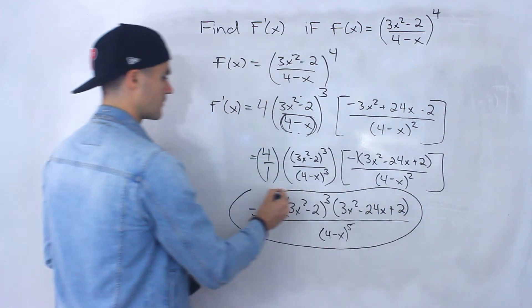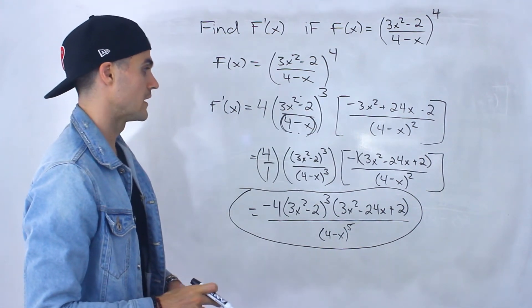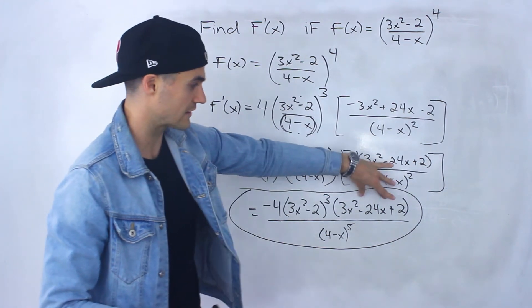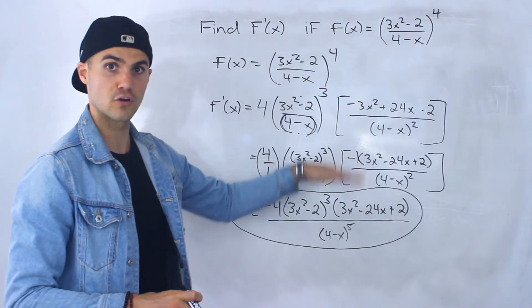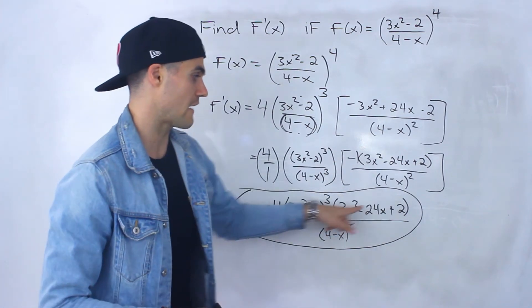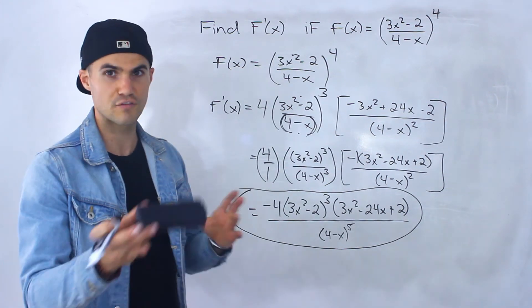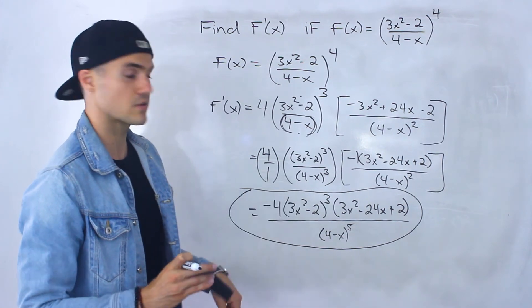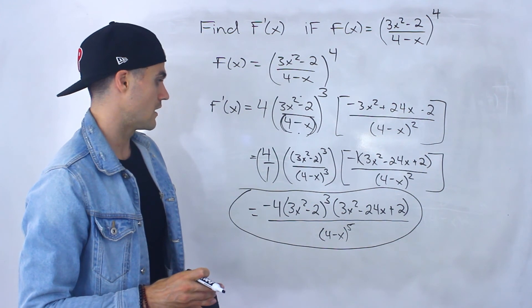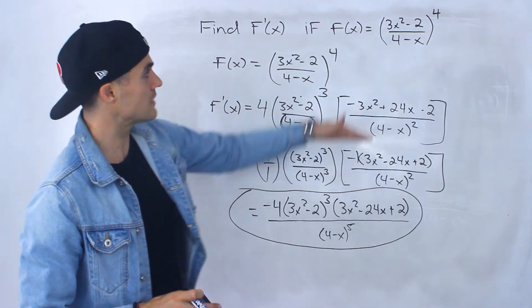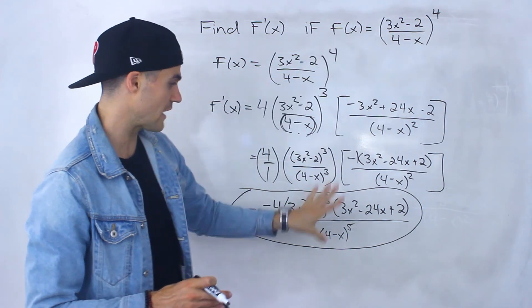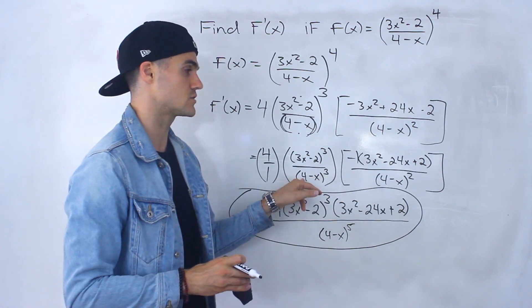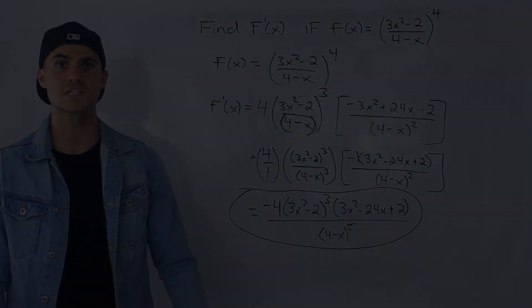So this here ends up being the final answer. Now with these kinds of questions, you also want to make sure that, if possible, you factor the numerator terms, because sometimes factors can further simplify. But notice that 3x squared minus 24x plus 2 wouldn't factor into nice factors, and 3x squared minus 2 wouldn't either. So this is the simplified version. A lot of times when you see a function like this, the final answer is going to be one fraction with the denominator combined. So just be on the lookout for that — you've got to do further simplification.